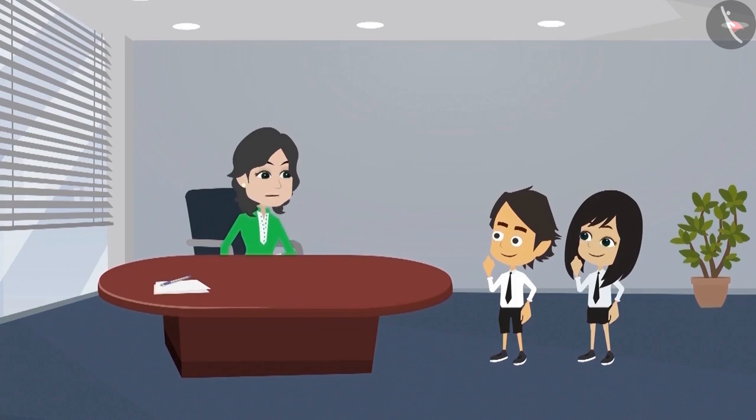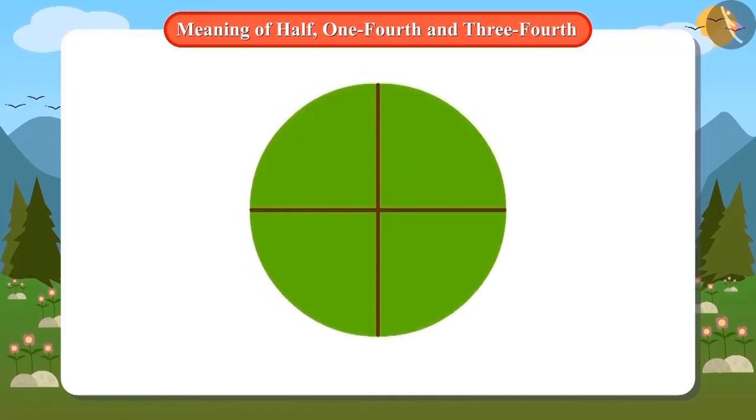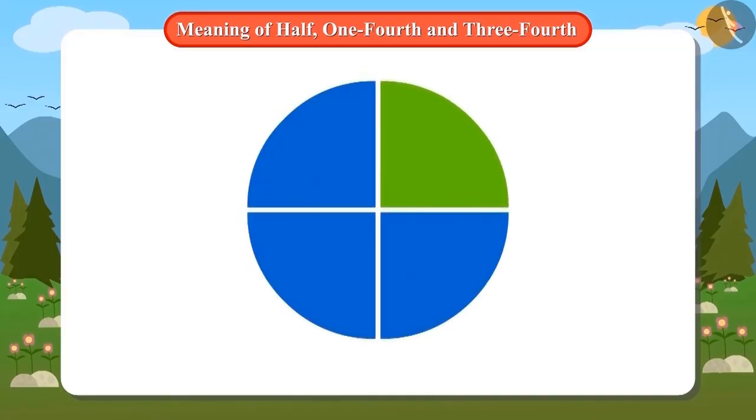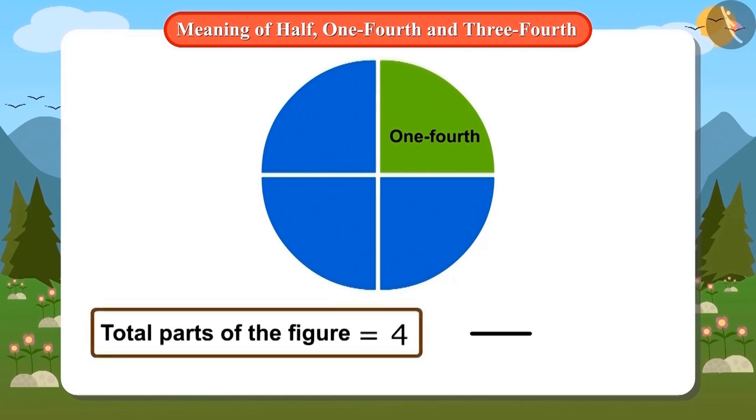And how do we write quarter? Exactly like I have written half, you can also write quarter. Let me try. One out of four equal parts of this figure is called quarter. To write this, we will first draw the line of division and then write the total number of parts of the figure. There are a total of four parts of this figure. Therefore, we will write four under the line, and one out of these four will be quarter.